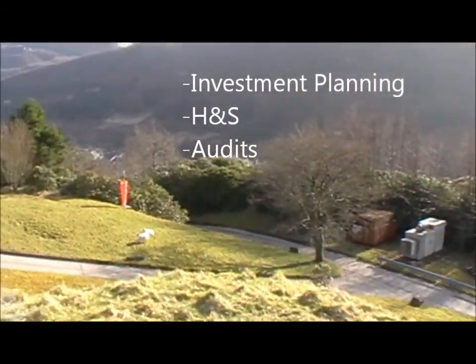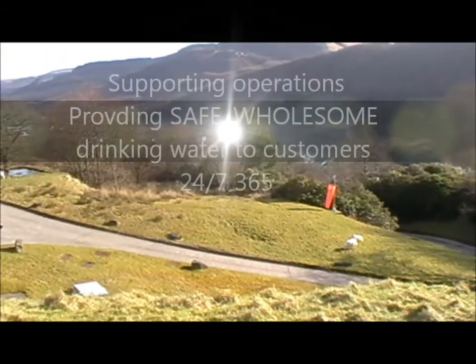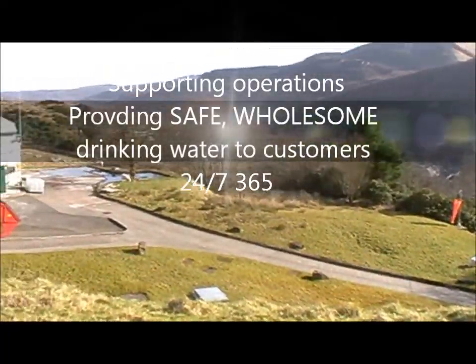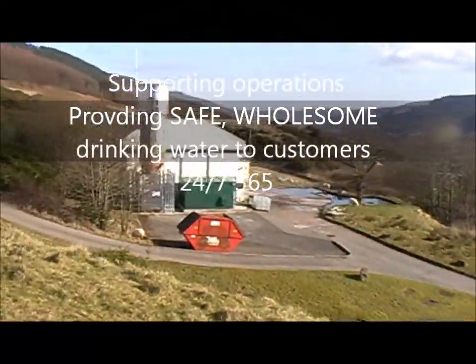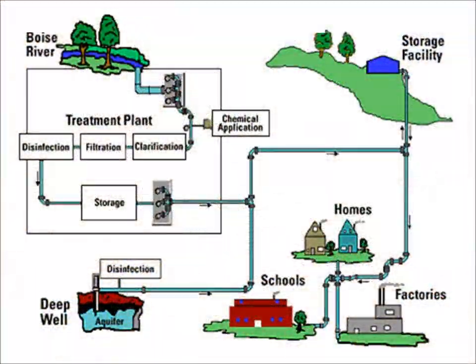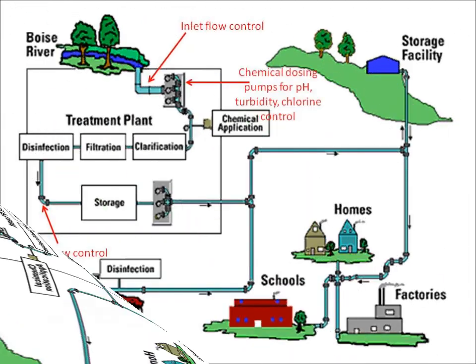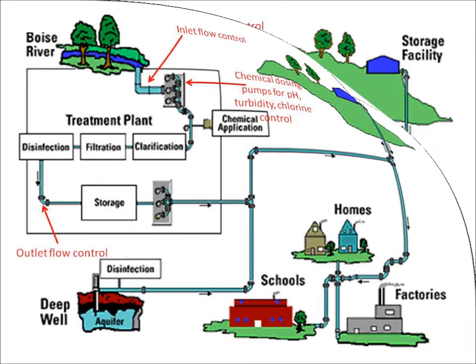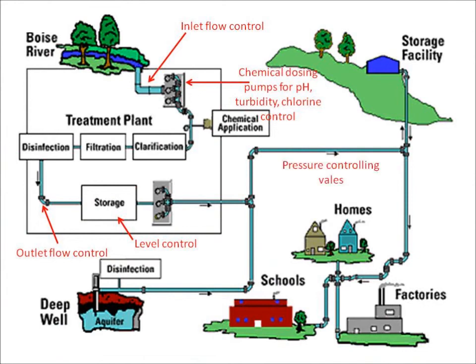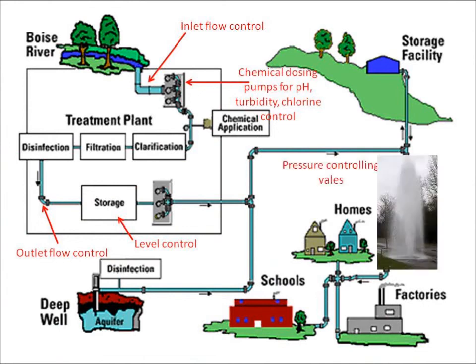My primary goal is to provide safe, wholesome drinking water 24-7, 365 days of the year. In order to provide this level of service and meet strict DWI regulations, we need constant monitoring of our processes, including inlet and outlet flows to meet demand, pH, turbidity and chlorine monitoring, service reservoir levels and network pressures — as drops in pressure could indicate bursts or leaks in the network.